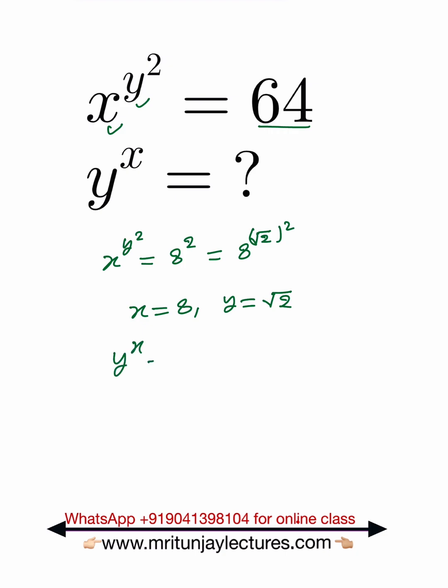Root 2 to the power 8 means you can write this one as root 2 to the whole power 2 times 4.